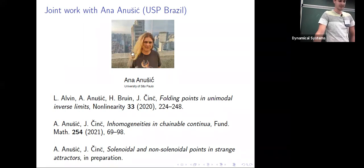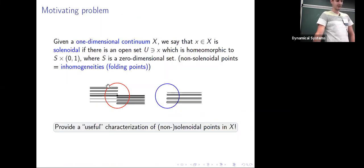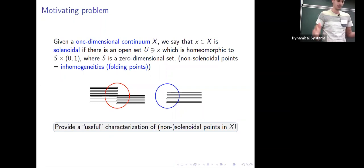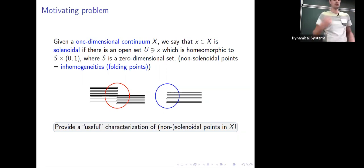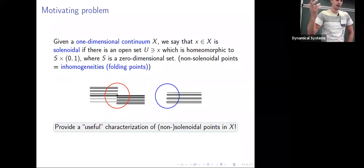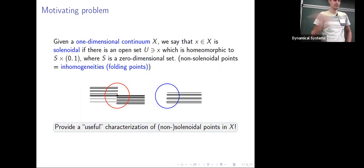A motivating problem: if you are given a one-dimensional continuum — by continuum I mean a compact connected metric space — try to give a useful characterization of points that are solenoidal versus non-solenoidal. Non-solenoidal points have neighborhoods of the form of some zero-dimensional set times an arc, so you can think about Cantor sets times an arc.